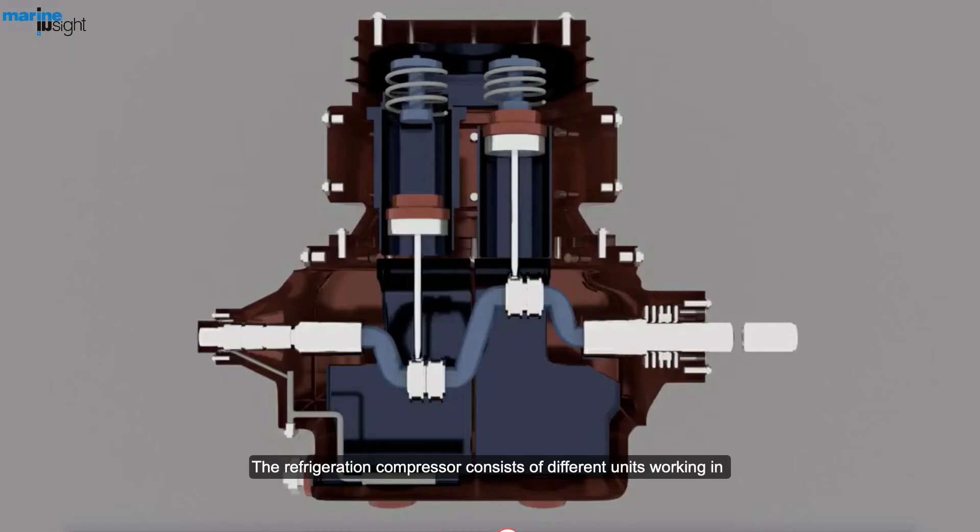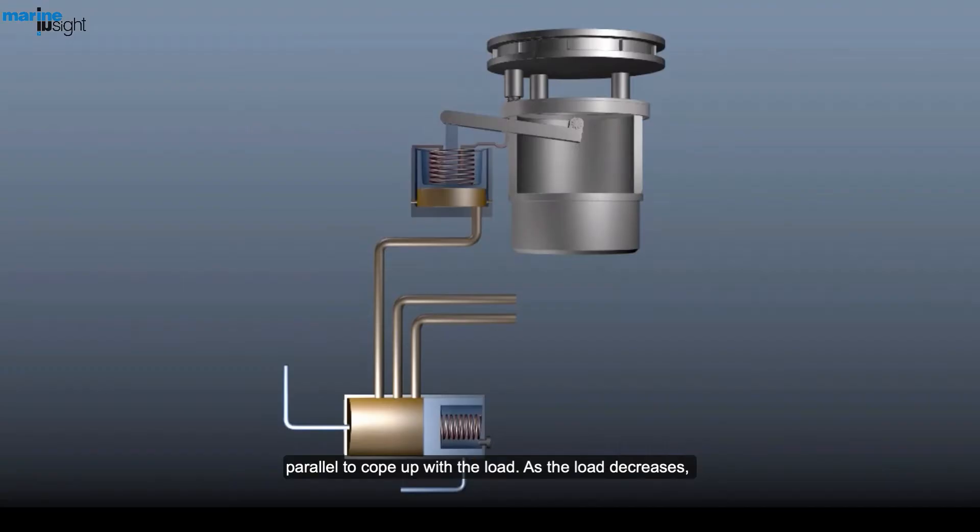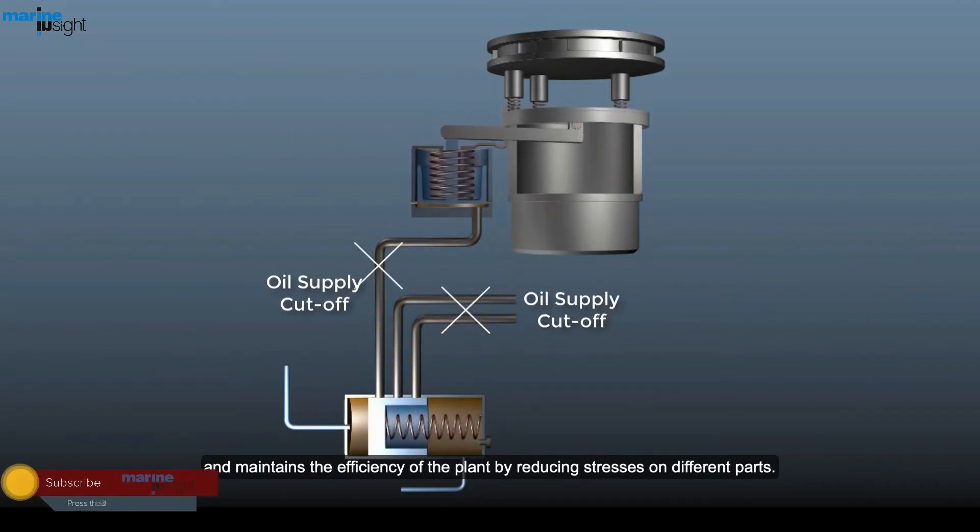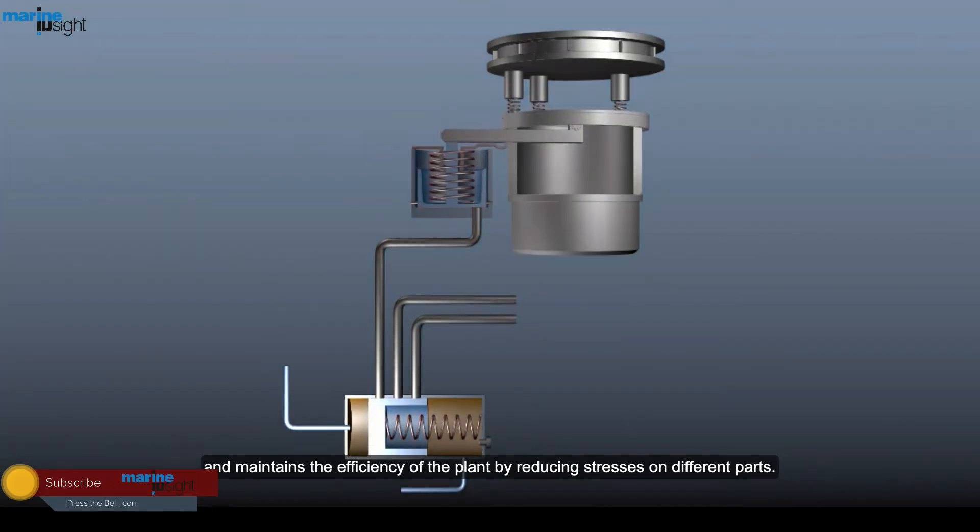The refrigeration compressor consists of different units working in parallel to cope up with the load. As the load decreases, the capacity control system cuts off one or more units, depending upon the load, and maintains the efficiency of the plant by reducing stress on different parts.